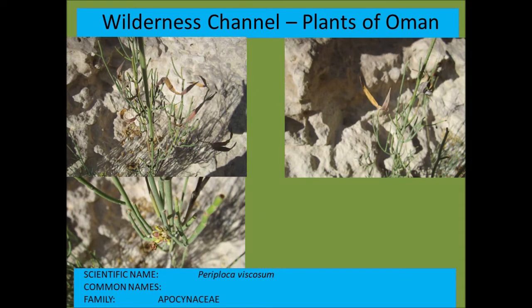Periploca viscosa — one of two species. This one has yellow flowers, as you can see in the bottom left picture. The other species is Periploca aphylla, which has purple flowers.